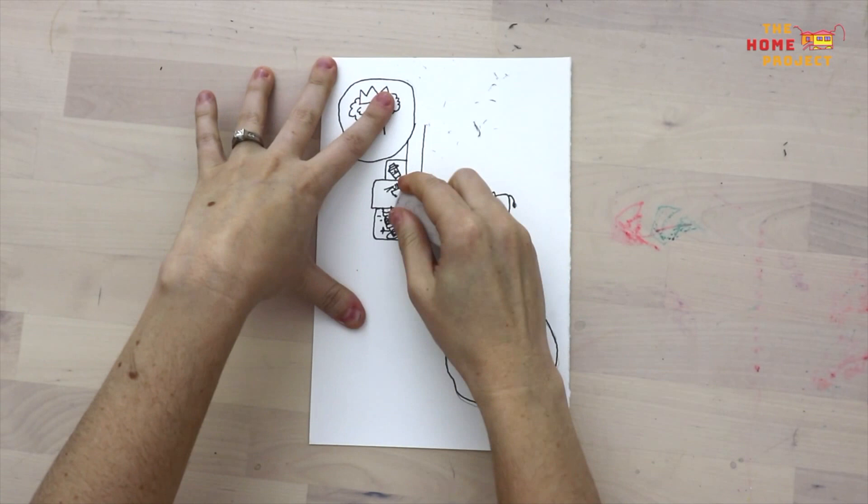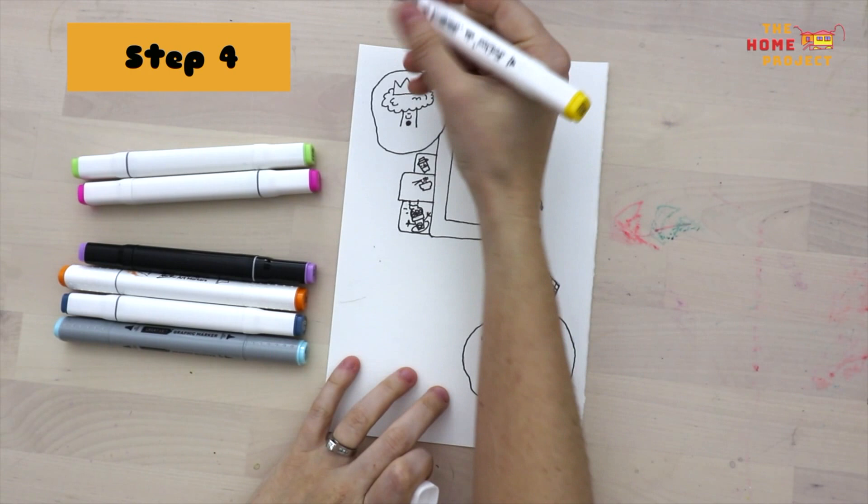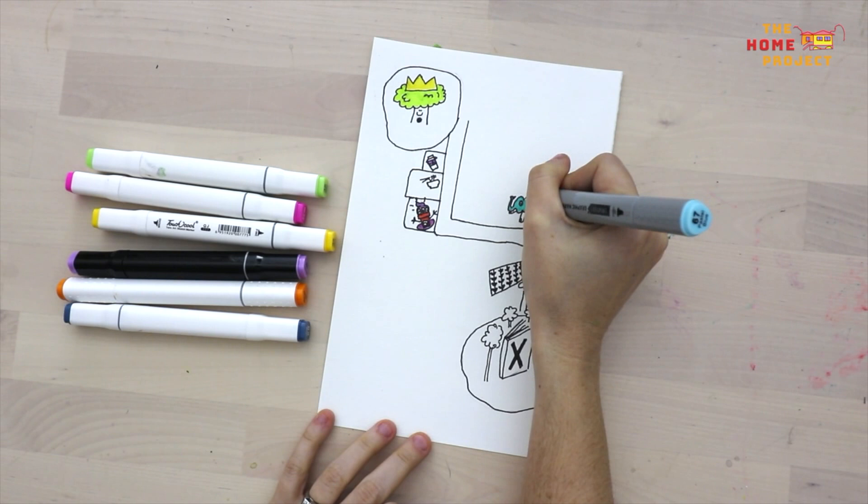Colours are important. They tell a story just as much as the map itself. You can use the colours as clues. Are there bright or dark areas on your adventure?